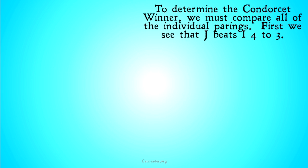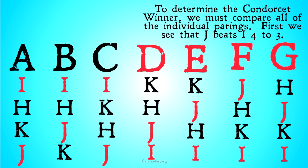To determine the winner in the Condorcet method we must compare all of the individual pairings. First let's look at I versus J. In four of the voters' rankings they've ranked J above I, so J gets four points in this competition. In three of the voters' rankings I is ranked above J. So basically, in a one-on-one head-to-head match between J and I, J would win — J beats I.